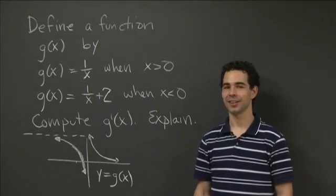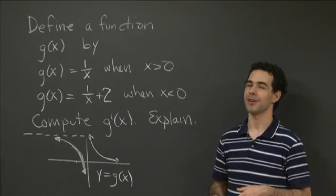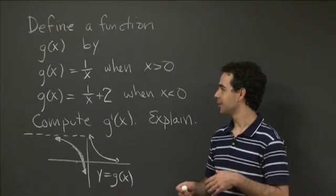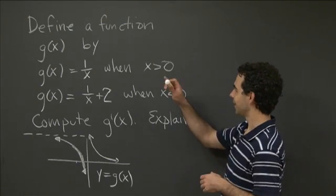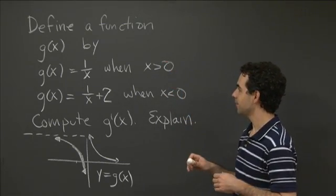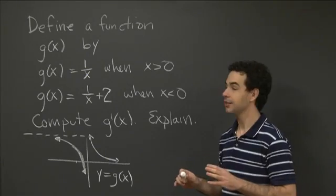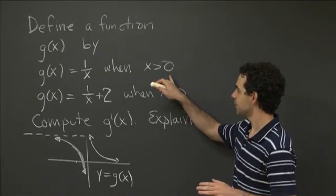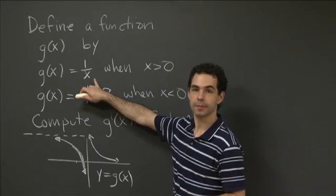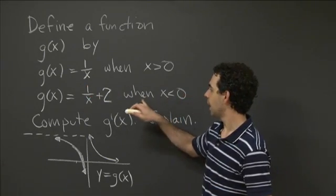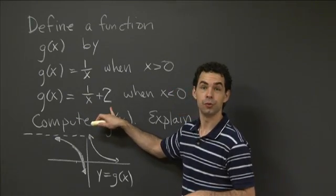Welcome back to recitation. I have here a little bit of a strange problem for you. I want to define a function g of x piecewise. When x is positive, g of x is 1 over x. But when x is negative, g of x is 1 over x plus 2.